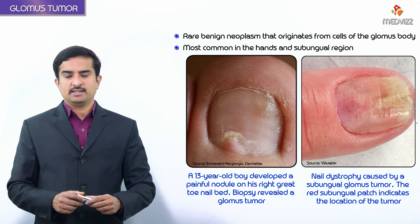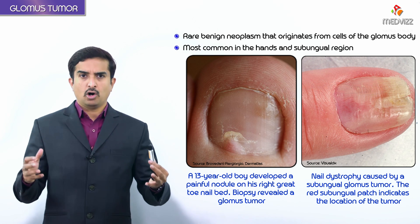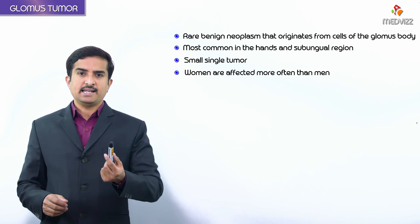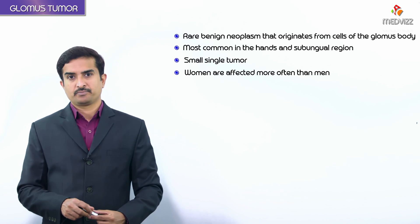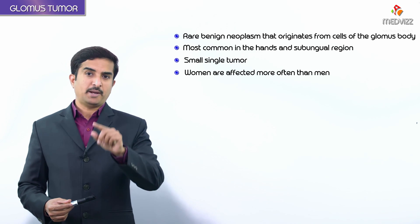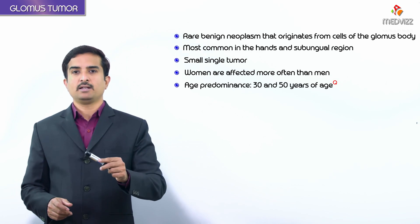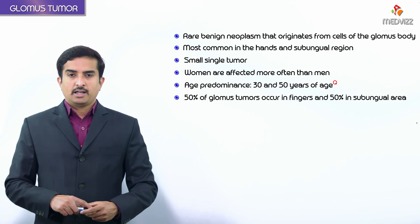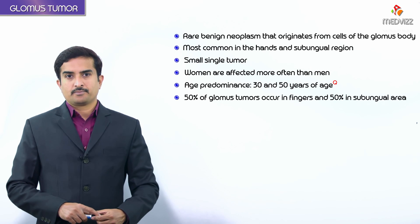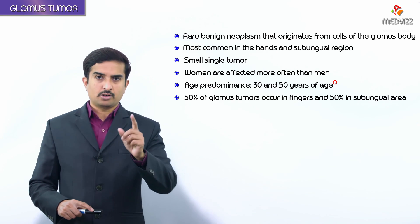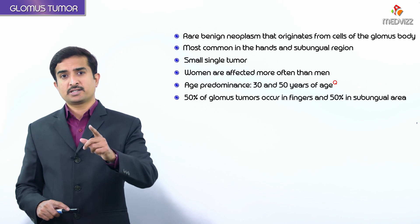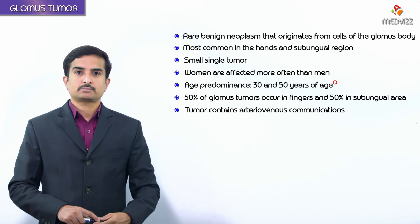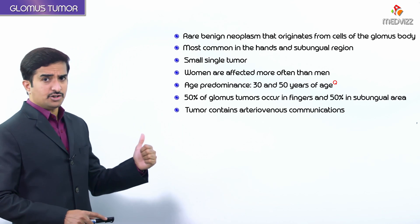In the vast majority of cases, these are very small and present as single tumors, more frequently seen in women than in men. Most patients with glomus tumors are between 30 to 50 years of age. Epidemiologically, 50% of glomus tumors occur in the fingers, and 50% are present in the sub-ungual area. These tumors mainly contain arteriovenous communications.